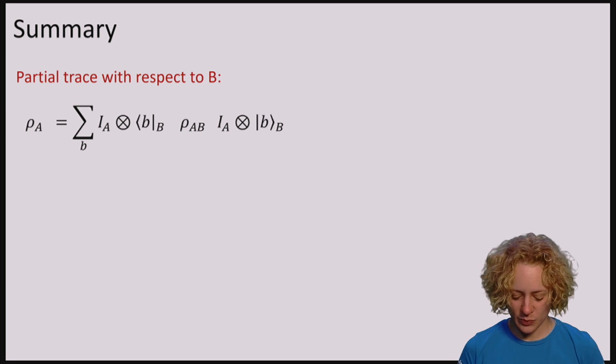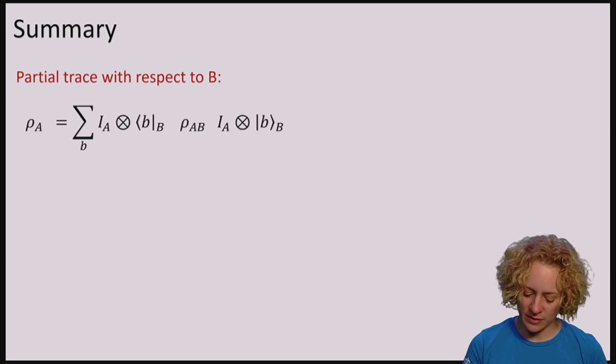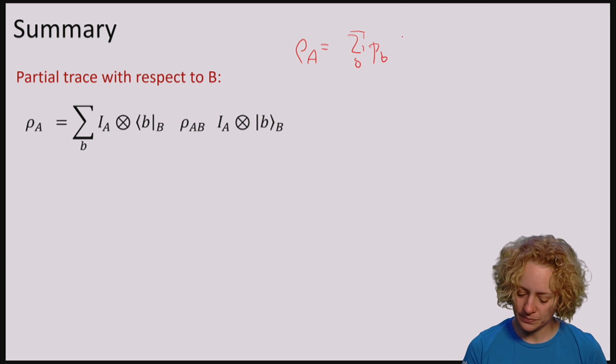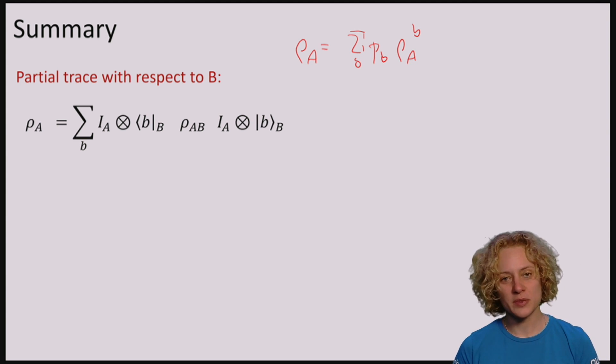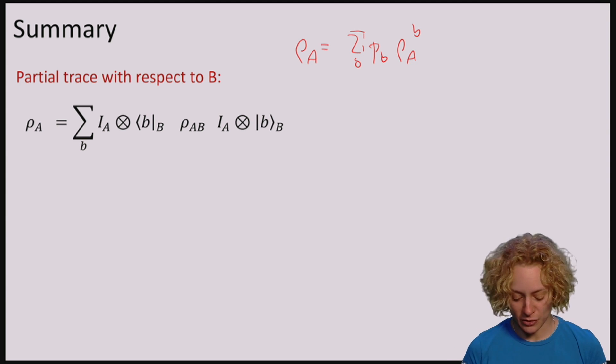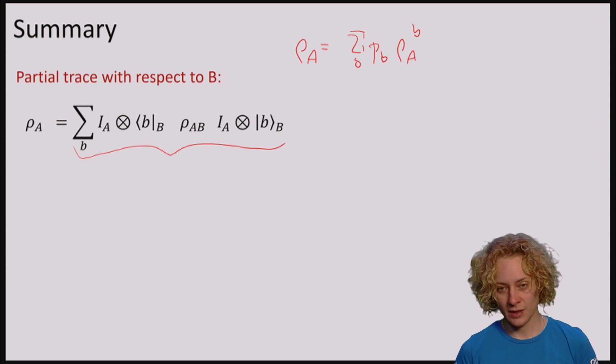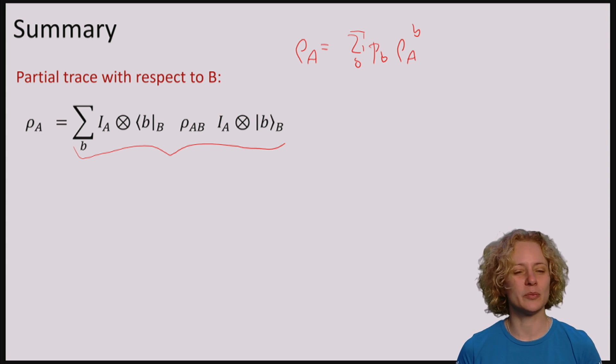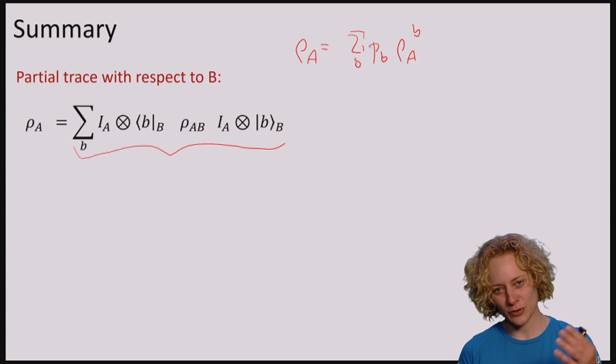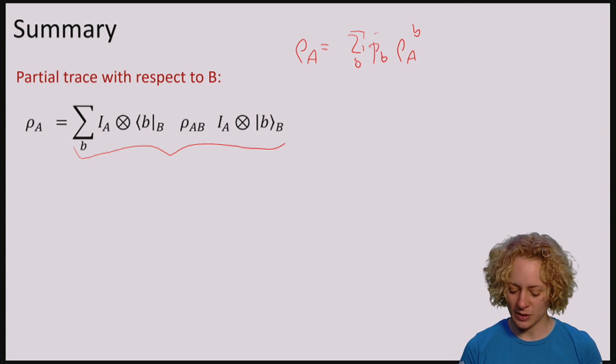So let's now use this and put this together. Using the fact that ρ_A is like measuring B and forgetting the outcome, we obtain that one way to compute the partial trace is to compute this term. So note that the probabilities again don't appear because we divide by one over P of B and we multiply by the same.